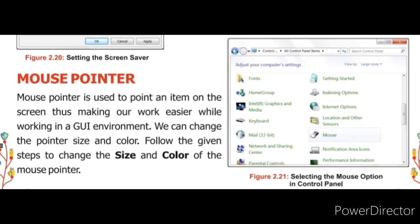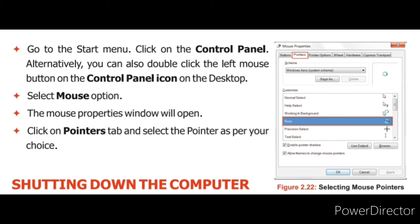जिससे हमारा work GUI environment में easy हो जाए. हम mouse pointer का color और size change कर सकते हैं, इन नीचे दिये गए steps के through. The first point is go to the start menu, click on the control panel. Alternatively you can also double click the left mouse button on the control panel icon on the desktop. Start menu में जाकर control panel को click करिए. आप mouse के left button को double click भी कर सकते हैं desktop पर control panel icon के उपर.